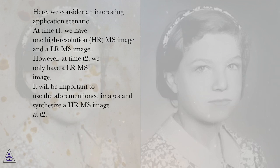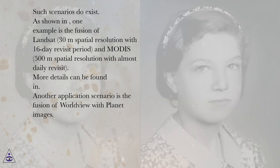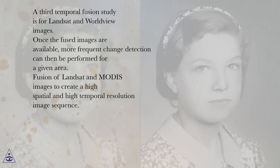We consider an interesting application scenario: at time T1, we have one high-resolution (HR) MS image and a low-resolution (LR) MS image; however, at time T2, we only have a LR-MS image. It will be important to synthesize a HR-MS image at T2. One example is the fusion of Landsat (30-meter spatial resolution, 16-day revisit) and MODIS (500-meter spatial resolution, nearly daily revisit). Other scenarios include fusion of WorldView with Planet images and Landsat with WorldView images. Once fused images are available, more frequent change detection can be performed. Fusion of Landsat and MODIS images creates a high-spatial and high-temporal resolution image sequence.